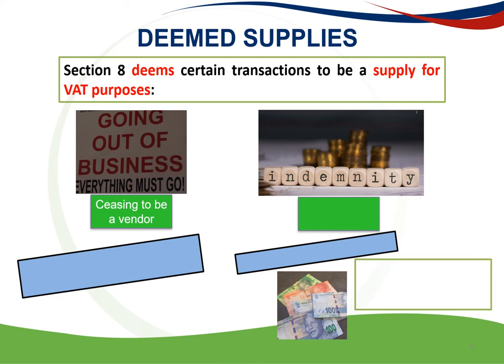On the date of ceasing to be a vendor, output tax becomes payable on all outstanding balances owing to suppliers not older than 12 months. The next deemed supply is indemnity payments. The reason for this deemed supply rule is as follows: if a vendor's stock is stolen and he receives cash from his insurance company, he is effectively in the same position as he would have been had he sold the stock. SARS wants the VAT on that disposal.